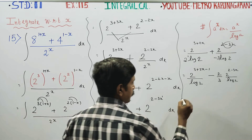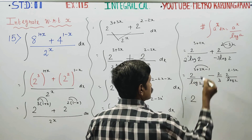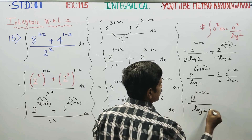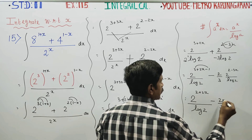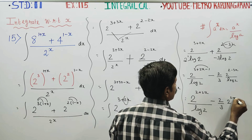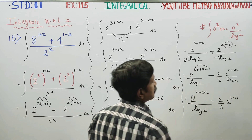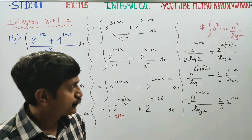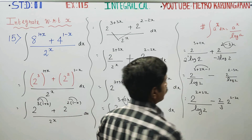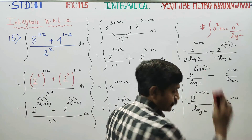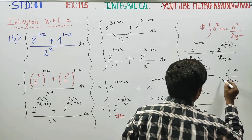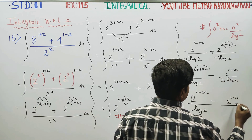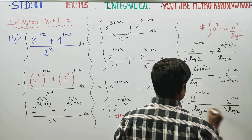Therefore, your final answer will be: 2 power (3 plus 2x) divided by 2 log 2, minus 2 power (2 minus 3x) divided by 3 log 2. This is your final answer.